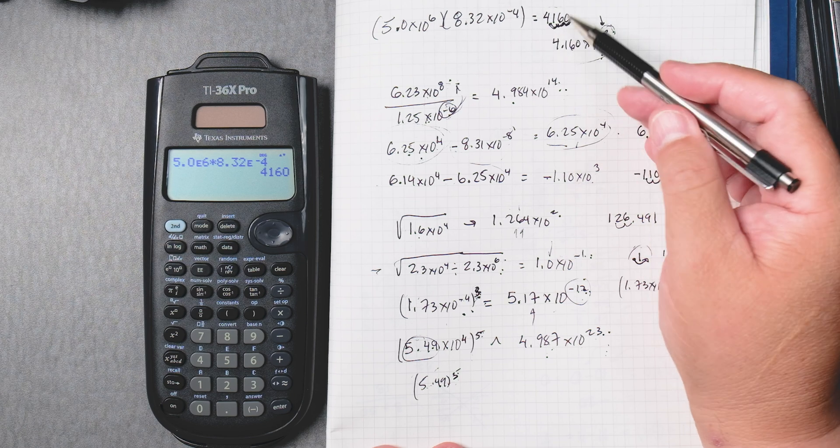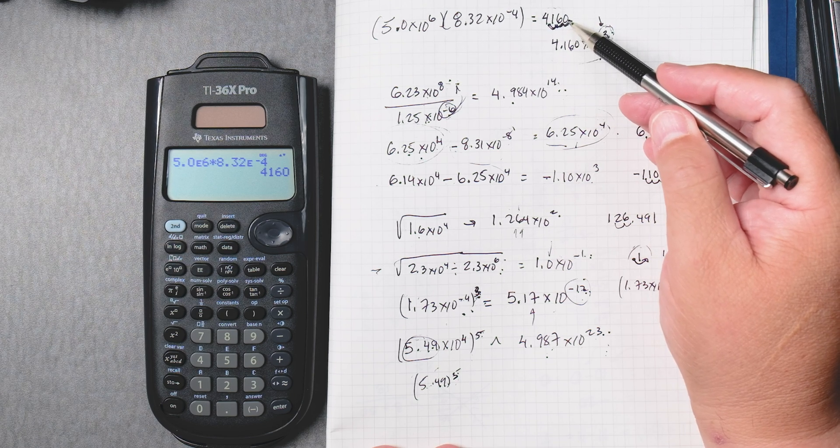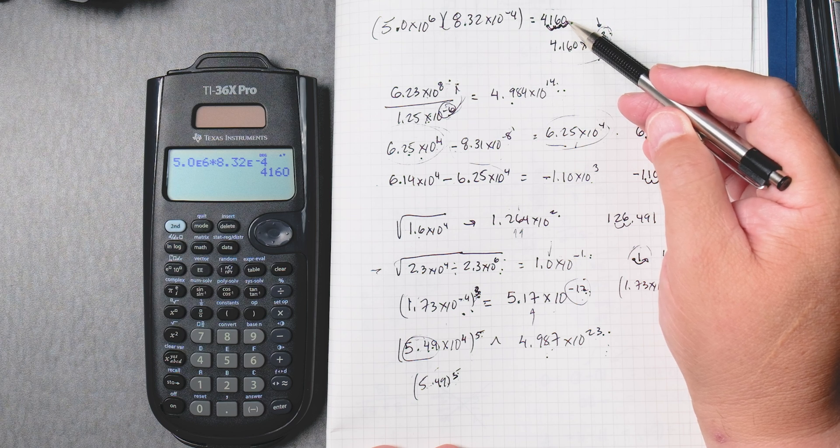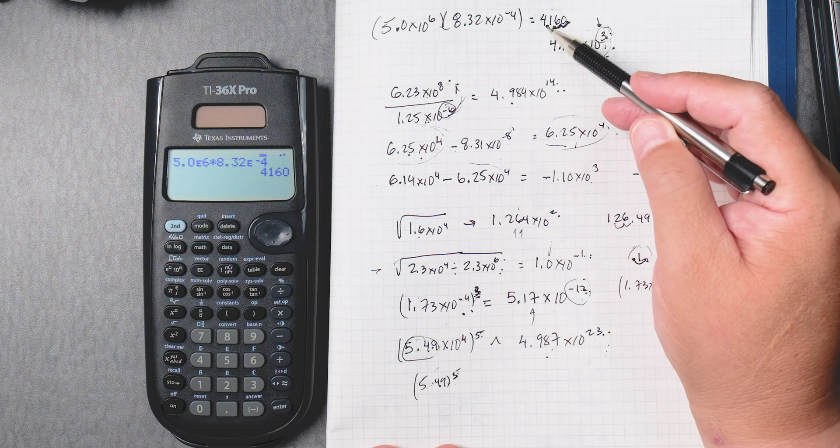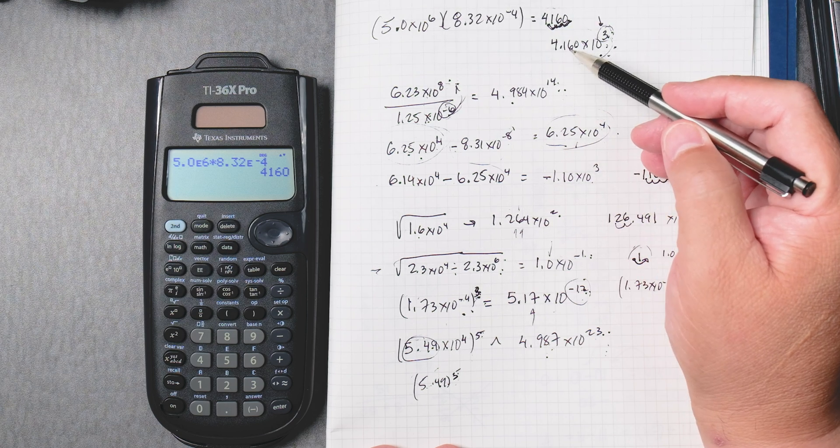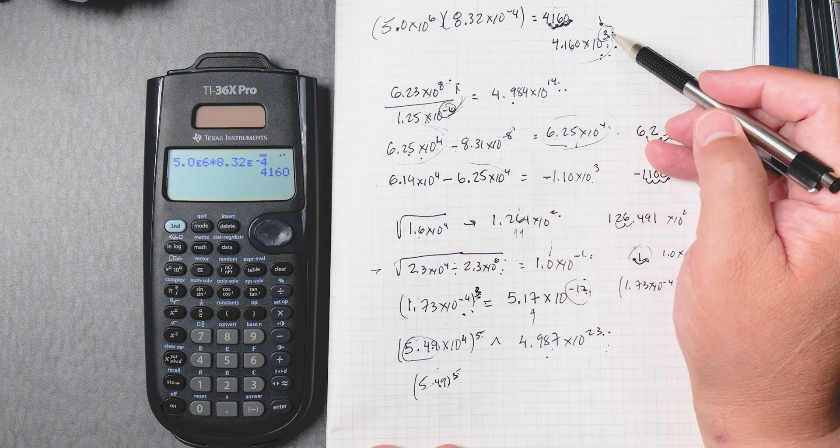Now, to change this to scientific notation, there's a period here. You move it 1, 2, 3. So you're making this big number a small number, to 4.16, times 10 to the third.